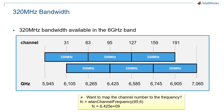Doubling the bandwidth poses challenges for the RF frontend, but it also requires finding that bandwidth. The new 6 GHz band is wide enough to offer several 320 MHz channels, as shown in this picture. There are three possible 320 MHz channels within that band, and two such combinations, offset by 160 MHz from each other.